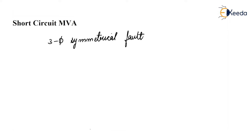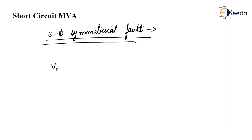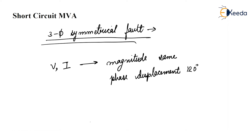Before that, let us understand what are 3-phase symmetrical faults. A symmetrical fault is a fault where all the phases are affected so that the system remains balanced. This means voltage and current in the system are balanced — magnitude is the same and phase displacement is 120 degrees. This is known as a symmetrical fault. Other fault types like line-to-ground, line-to-line, and line-to-line-to-ground are called unsymmetrical faults.